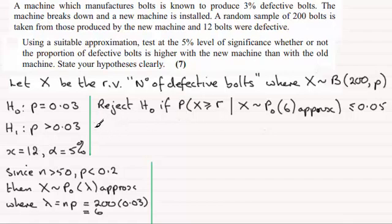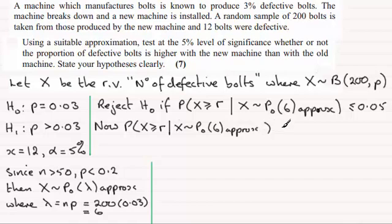We've got the probability that X is greater than or equal to the critical value R, given then that X is distributed as a Poisson distribution with mean 6 approximately—just put approx in there—and that's got to be less than or equal to 0.05.